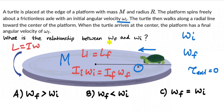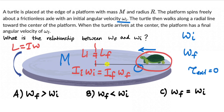To find the relationship between ω_f and ω_i, we need to know the relationship between the initial and final moment of inertia. Initially, the turtle is at the edge of the platform, contributing to the moment of inertia at maximum radius. When the turtle moves toward the center, some mass moves toward the axis of rotation. Since moment of inertia is Σmr², as r decreases — more mass concentrated near the axis — the final moment of inertia of the system decreases.